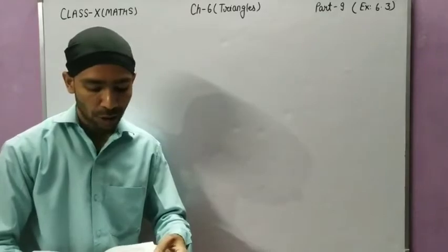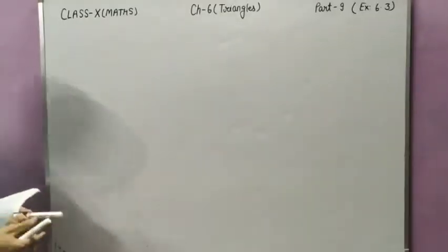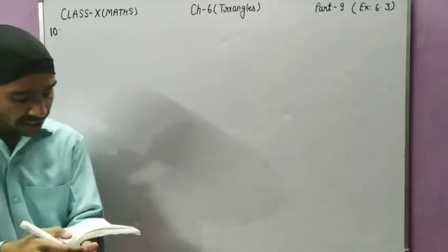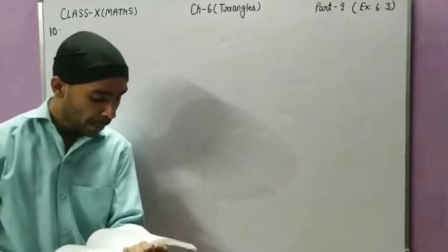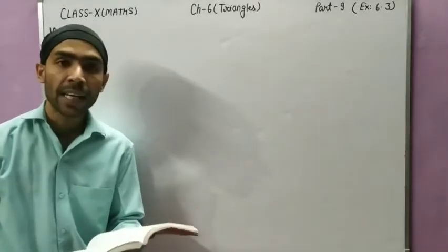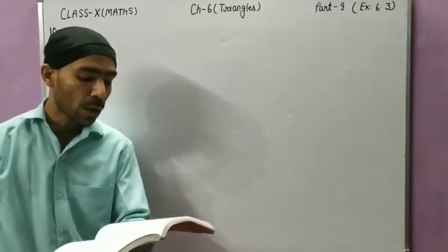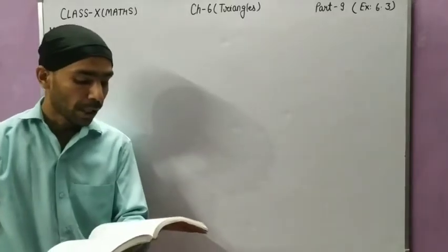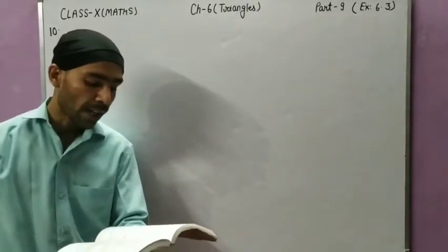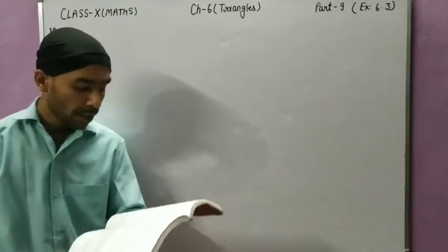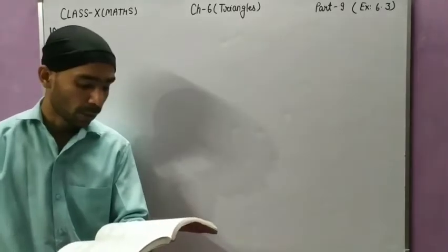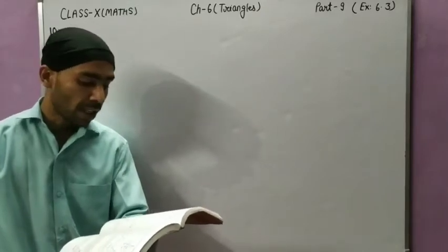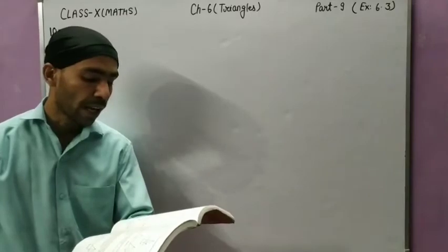Question number 10 is very important. CD and GH are respectively the bisectors of angle ACB and angle EGF such that D and H lie on sides AB and FE of triangle ABC and triangle EFG. If triangle ABC is similar to triangle FEG, show that: first, CD divided by GH equals AC by FG; second, triangle DCB is similar to triangle HGE; and third, triangle DCA is similar to triangle HGF.